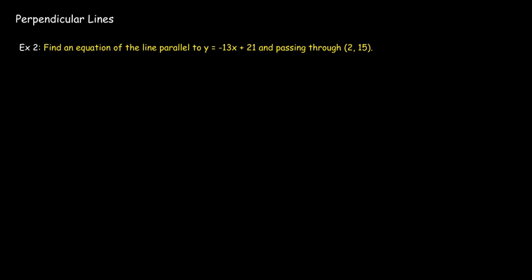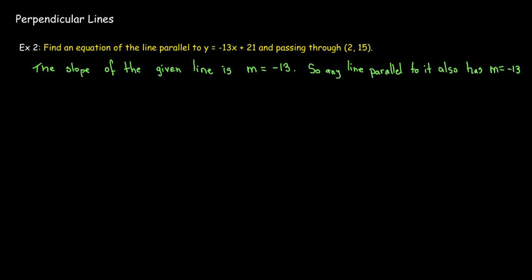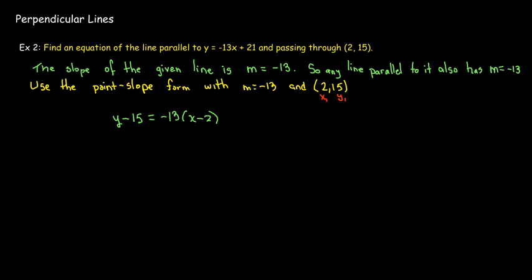So, how can we go about it? Well, the slope of the given line is negative 13. So, any line parallel to that, and that's one of the lines that we're looking for, right? Is a line that's parallel to it. We'll also have a slope of m equals negative 13. So, now I know the slope. I'm given a point. I can use the point slope form and write down an equation.